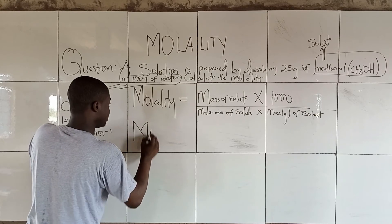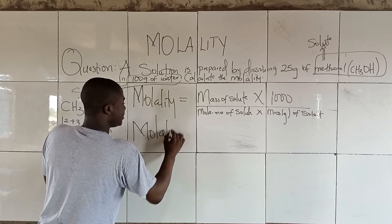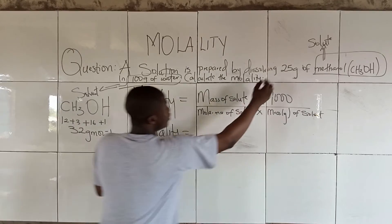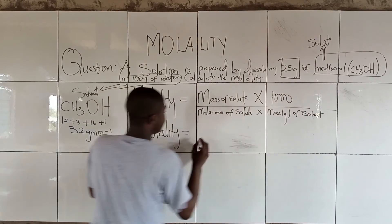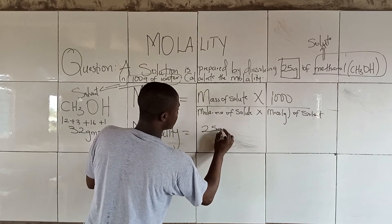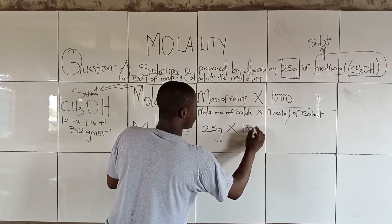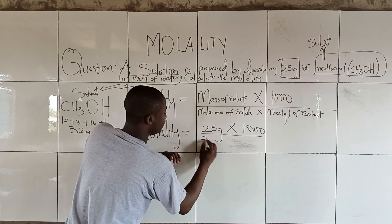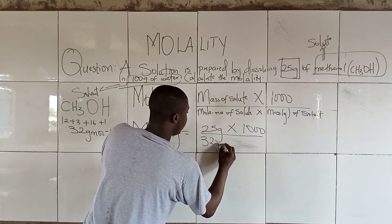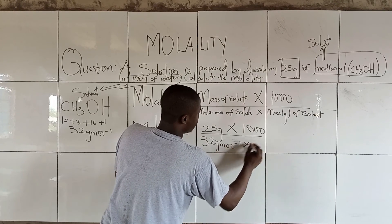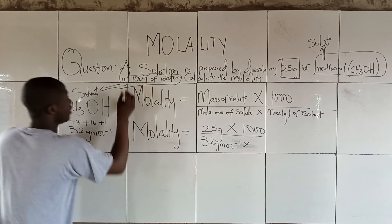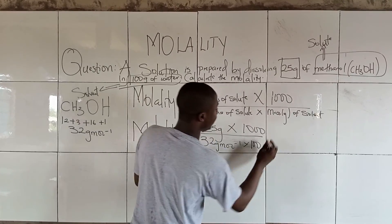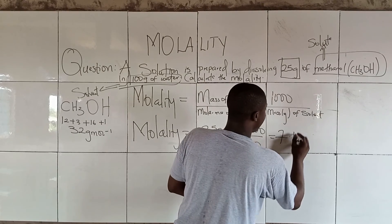Now, let's input our parameters. Molality equals mass of solute, the solute is methanol, so this is the mass 25 grams times 1000 over molar mass of solute, which is given to be 32 grams per mole, times mass of solvent. The solvent is water, so the mass is 100 grams.